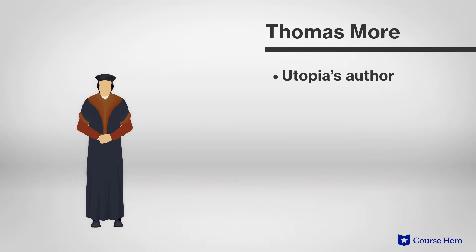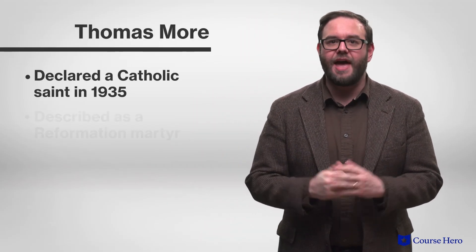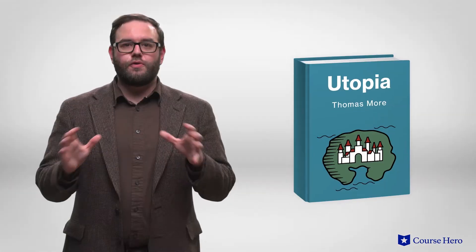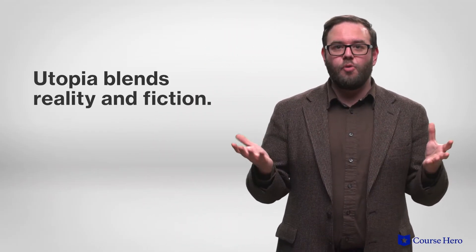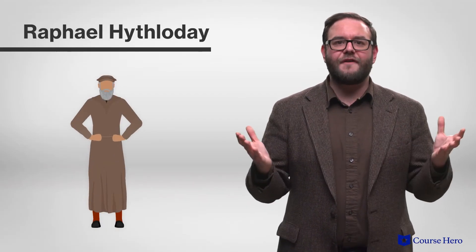Let's examine the two central characters in Utopia, the first of whom is Thomas More. The real Sir Thomas More, Utopia's author and the book's narrator, was one of the most famous men in European history — a writer, lawyer, philosopher, and politician. More was declared a Catholic saint in 1935 and described as a Reformation martyr. Utopia blends reality and fiction as More meets up with real-world friends, great scholars of the time like Peter Giles, and wise imaginary characters like long-winded traveler Raphael Hithloday.